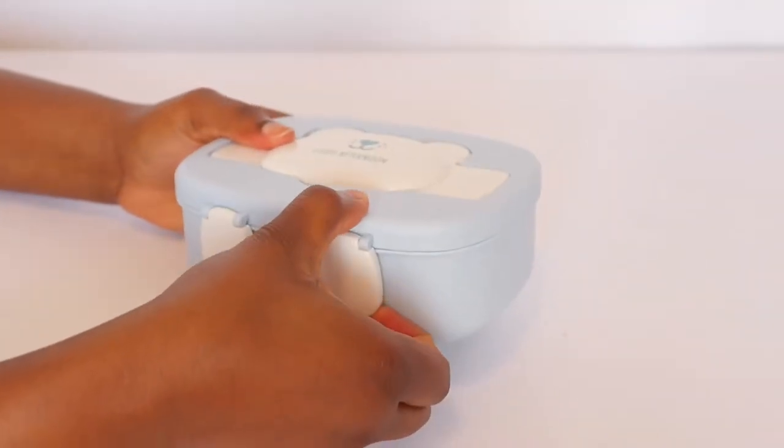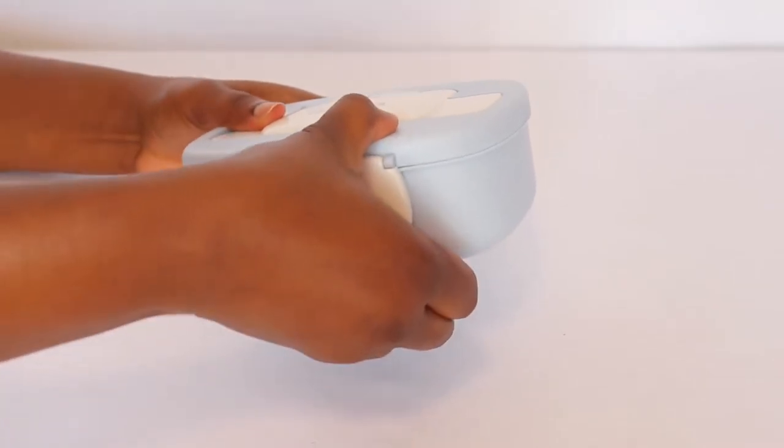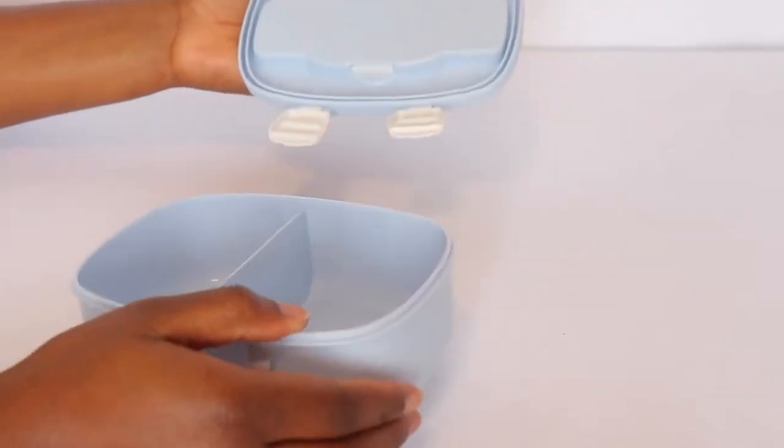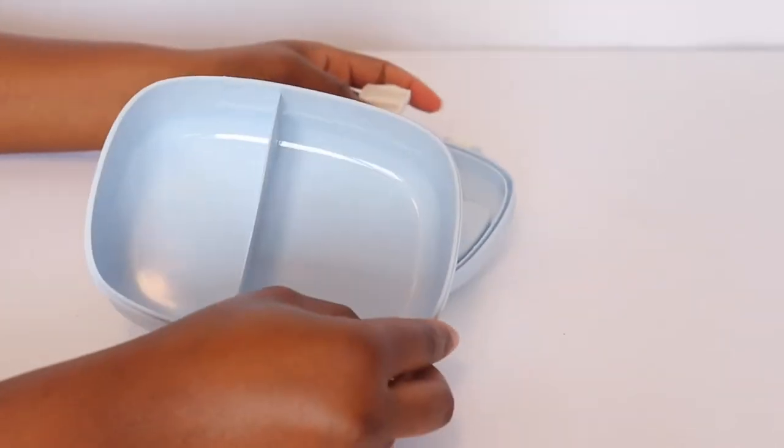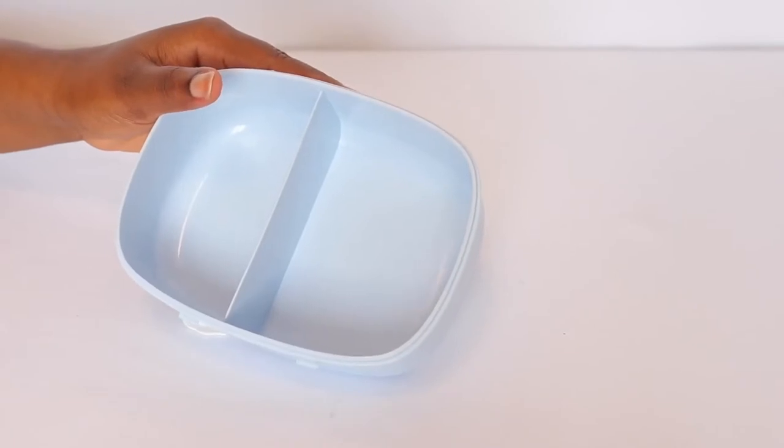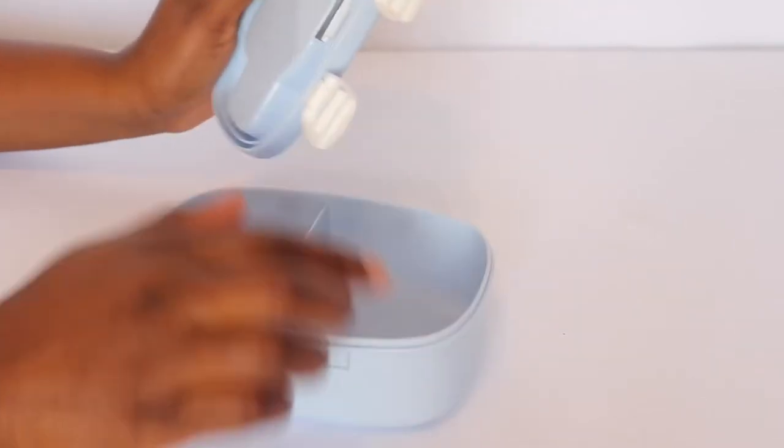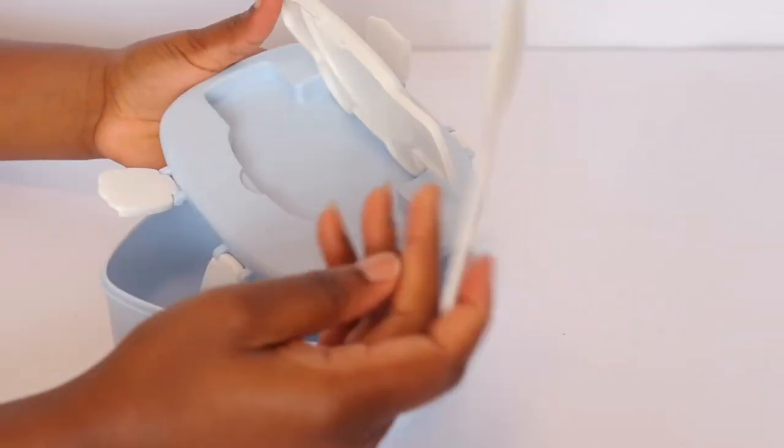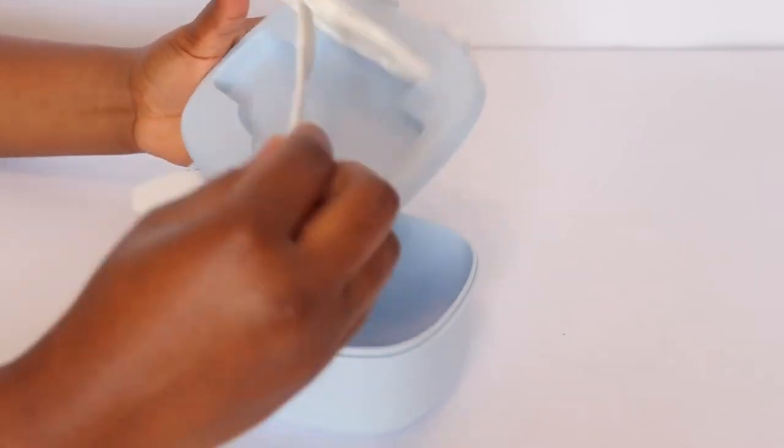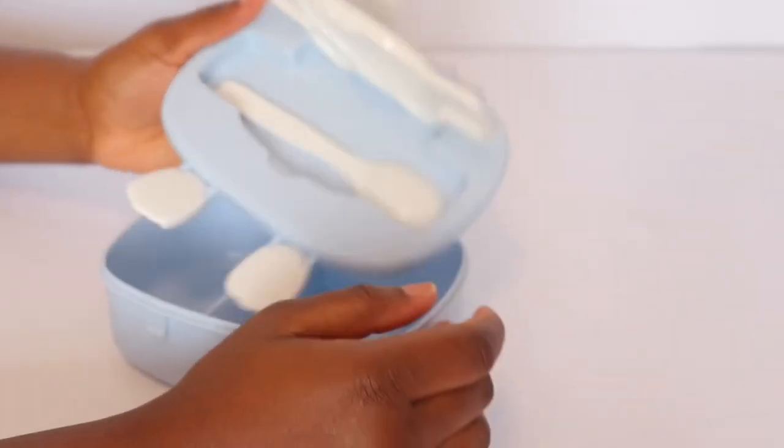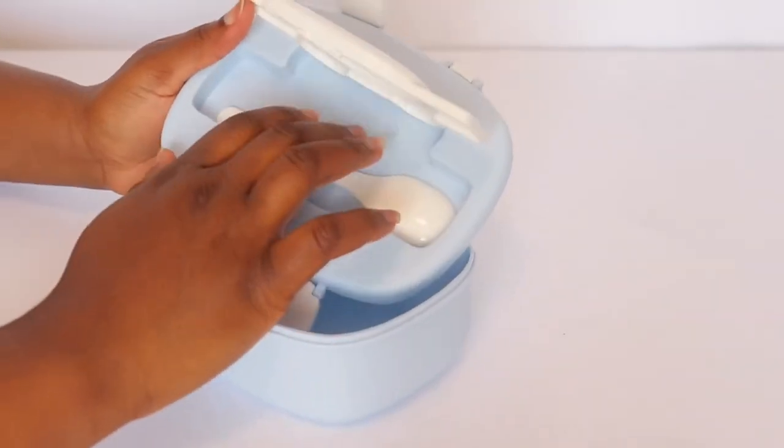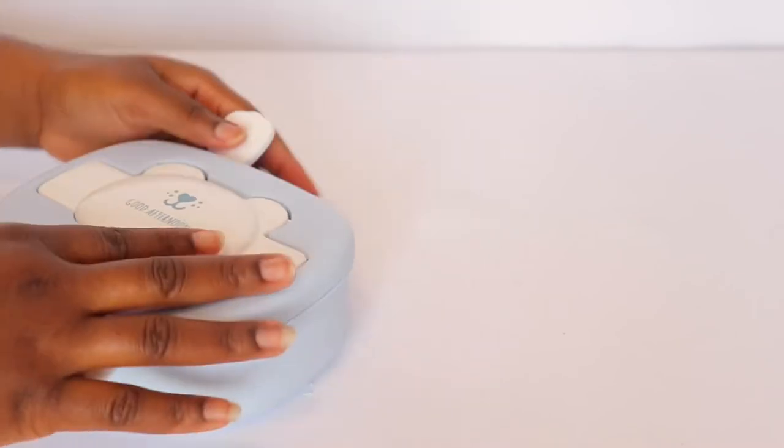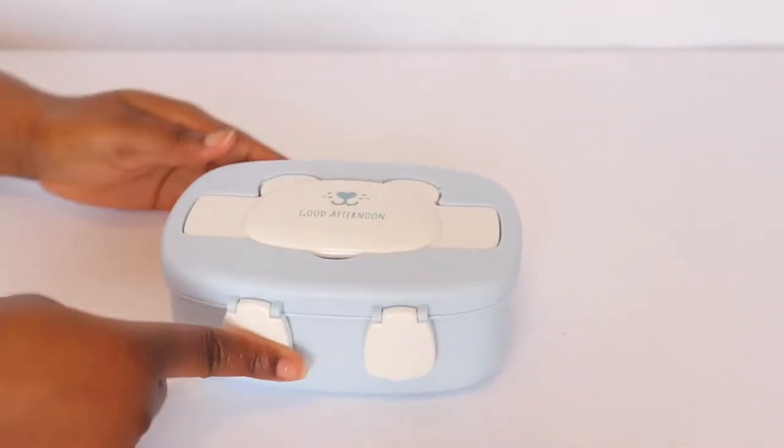This is what the lunch box looks like. This is what it looks like. For your lettuce, sausages, and all those things. And it came with a spoon, a mini spoon. It's meant to have something else here according to the photo, but I'm not sure. This is what the lunch box actually looks like and I love it. It's very, very beautiful.